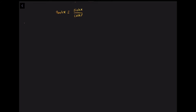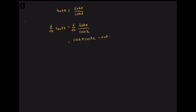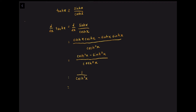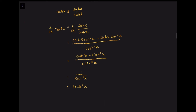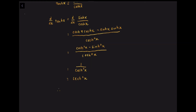To differentiate tanh(x), we use the identity tanh(x) equals sinh(x) over cosh(x). Using the quotient rule, d/dx of tanh(x) equals (cosh(x)·cosh(x) minus sinh(x)·sinh(x)) over cosh²(x). Since cosh²(x) minus sinh²(x) equals 1, we get 1 over cosh²(x), which is sech²(x). Therefore, d/dx of tanh(x) equals sech²(x).